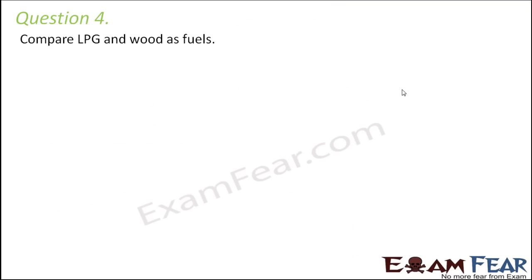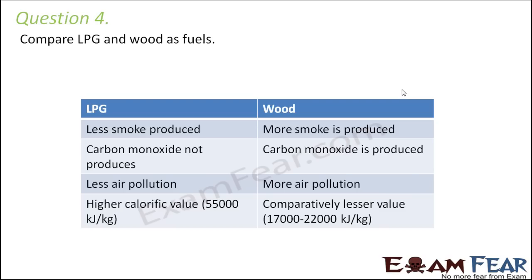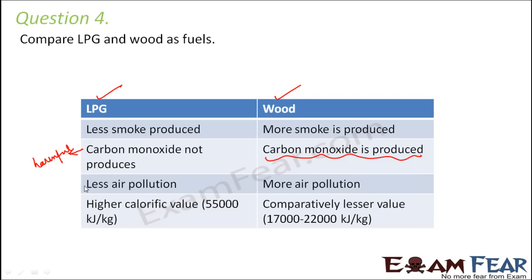Question number four: compare LPG and wood as fuels. LPG is more environment friendly compared to wood. When LPG is burnt, very little or no smoke is produced, but wood produces a lot of smoke which is hazardous for health. In LPG, carbon monoxide is not produced, but when you burn wood, carbon monoxide is produced. Carbon monoxide is a harmful gas that causes environmental pollution and results in acid rain. So LPG causes less air pollution — no smoke, no carbon monoxide, no harmful gases — whereas wood causes a lot of air pollution.